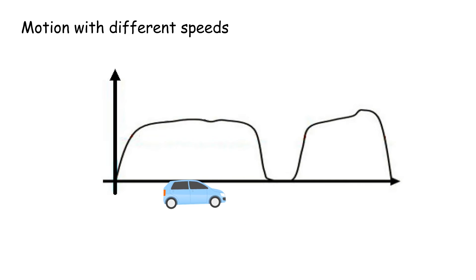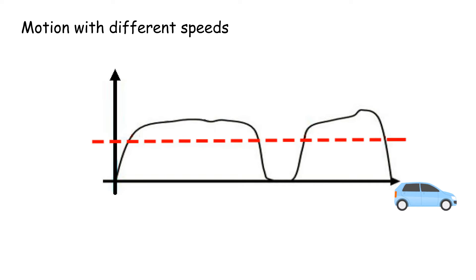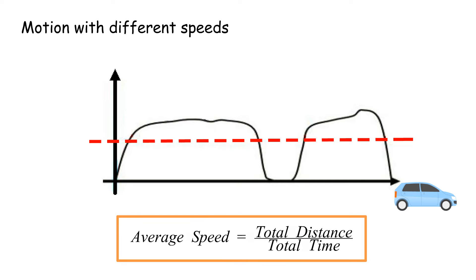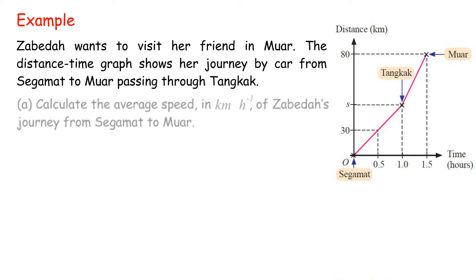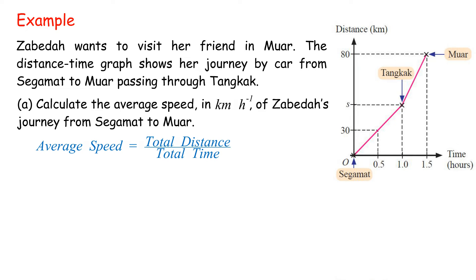Motion with different speeds: the speed of a motion usually changes in a journey. In such situations, average speed is used. Average speed equals total distance divided by total time. Example: Sabita wants to visit her friend in Muar. The Distance-Time Graph shows her journey by car from Segamat to Muar passing through Tangkak. A. Calculate the average speed in km per hour: average speed equals 80 km divided by 1.5 hours, equals 53 and one-third km per hour.